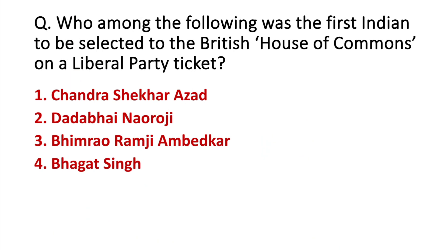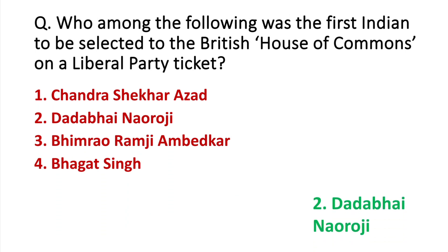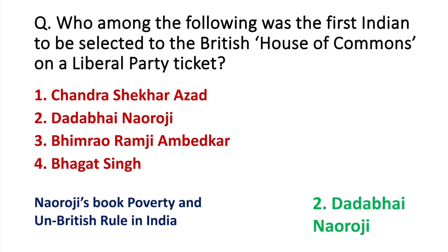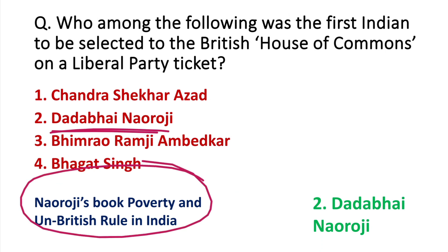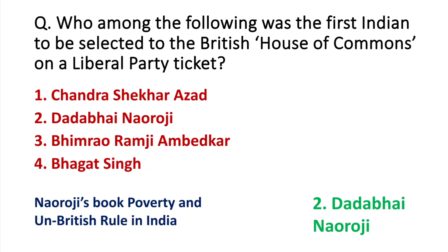Who among the following was the first to be elected to the British House of Commons on a Liberal Party ticket? The correct answer is Dadabhai Naoroji. He was the first person to be elected to the British Parliament. He is also called the Grand Old Man of India. His important book is 'Poverty and Un-British Rule in India.' He was also the first Indian to conduct a survey on poverty in India.